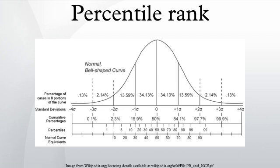For example, a test score that is greater than or equal to 75% of the scores of people taking the test is said to be at the 75th percentile rank.